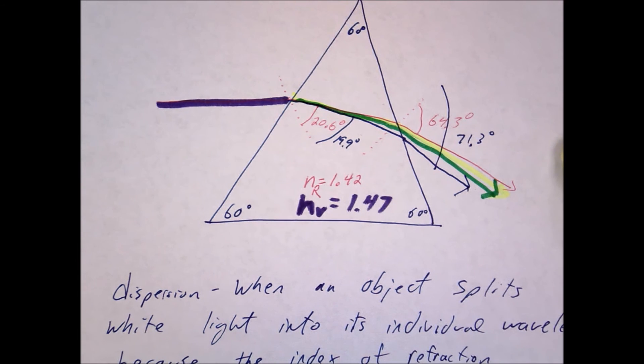Notice what color is on top? Red. What color is at the bottom? Violet. That's because which one bends more? Violet. So where else do you see this effect in daily life?